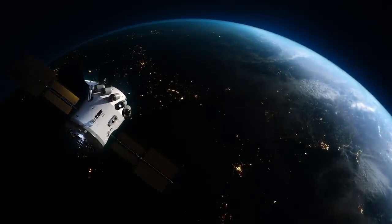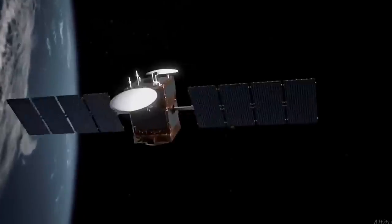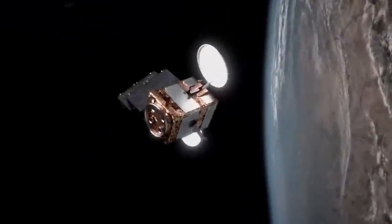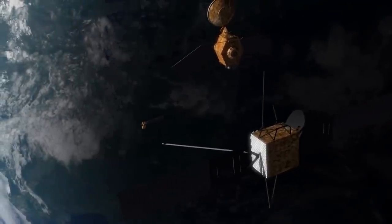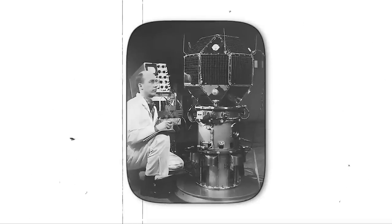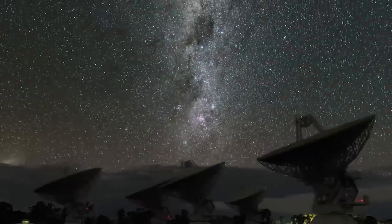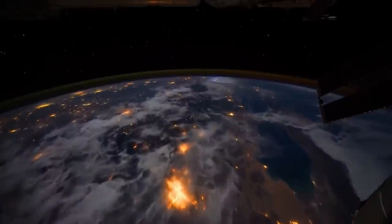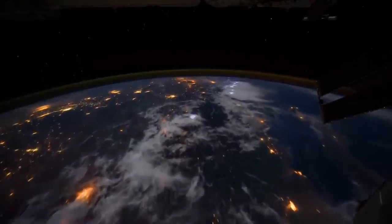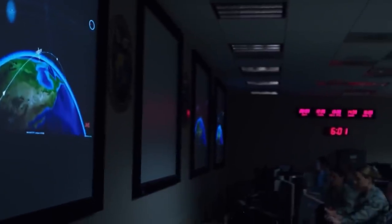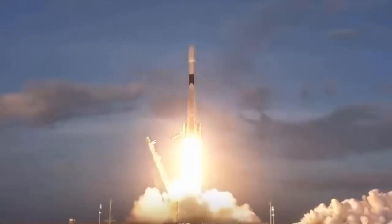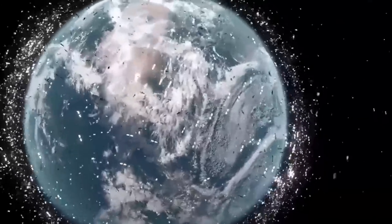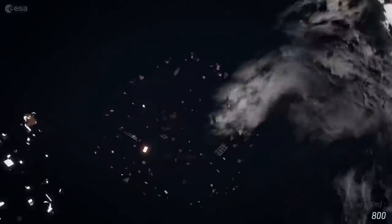However, they remain in orbit and can pose a risk to other operational satellites and space missions. Zombie satellites can range in size from small cubesats to large communication or navigation satellites. They can remain in orbit for years, decades, or even centuries, depending on their altitude and the nature of their orbit. Because they are no longer controlled or monitored by their operators, zombie satellites can collide with other objects in orbit, creating dangerous debris that can damage active satellites or spacecraft.